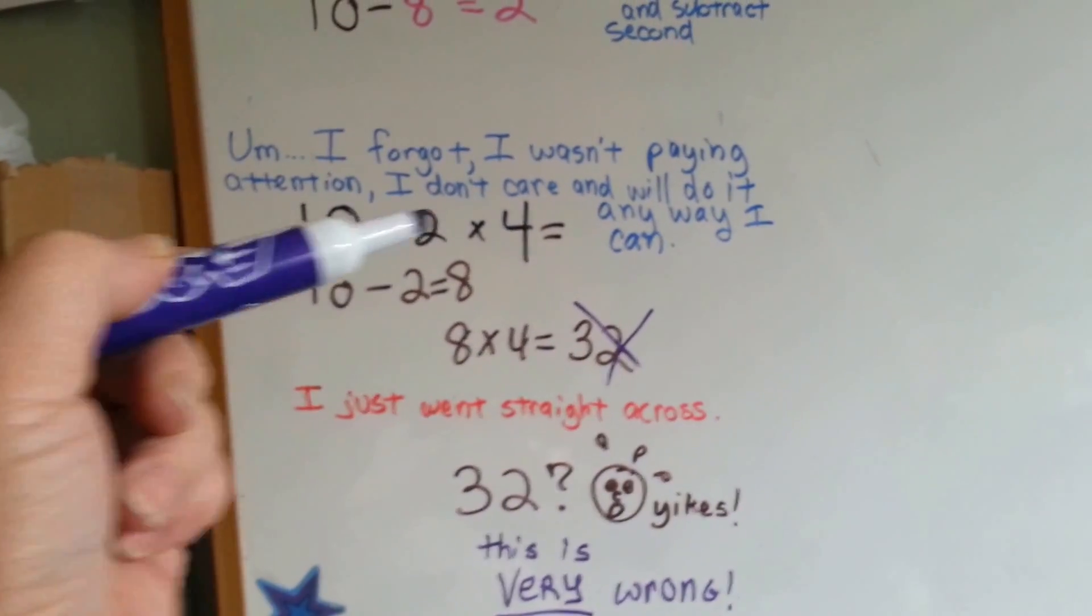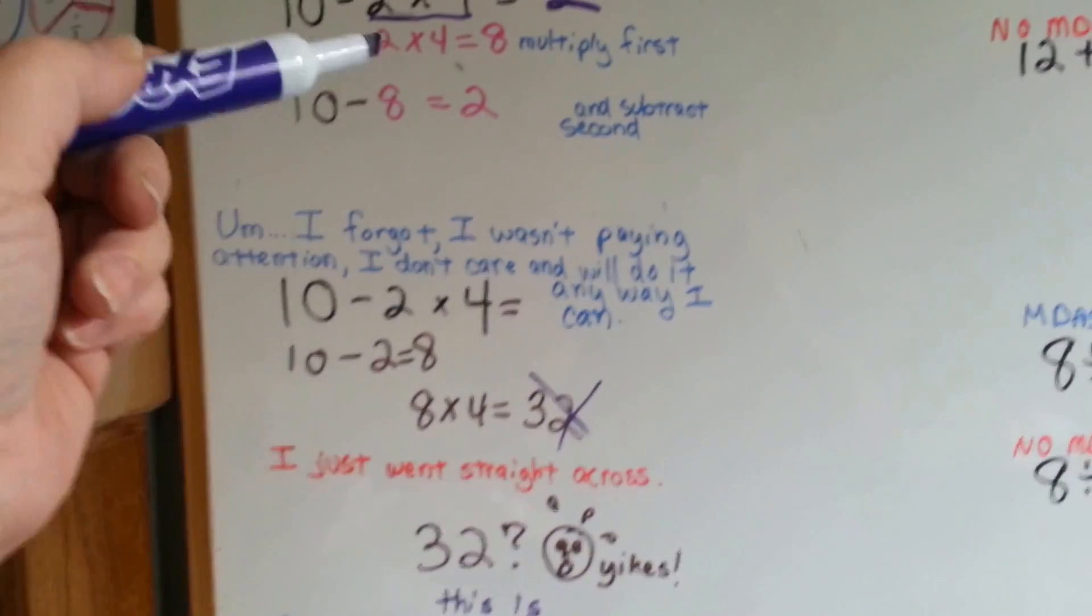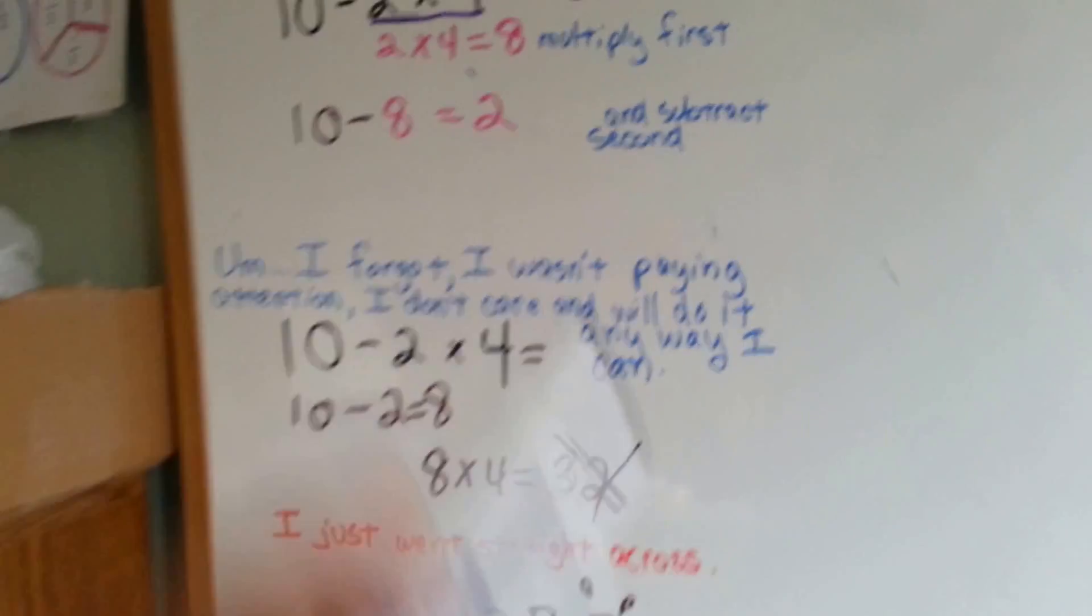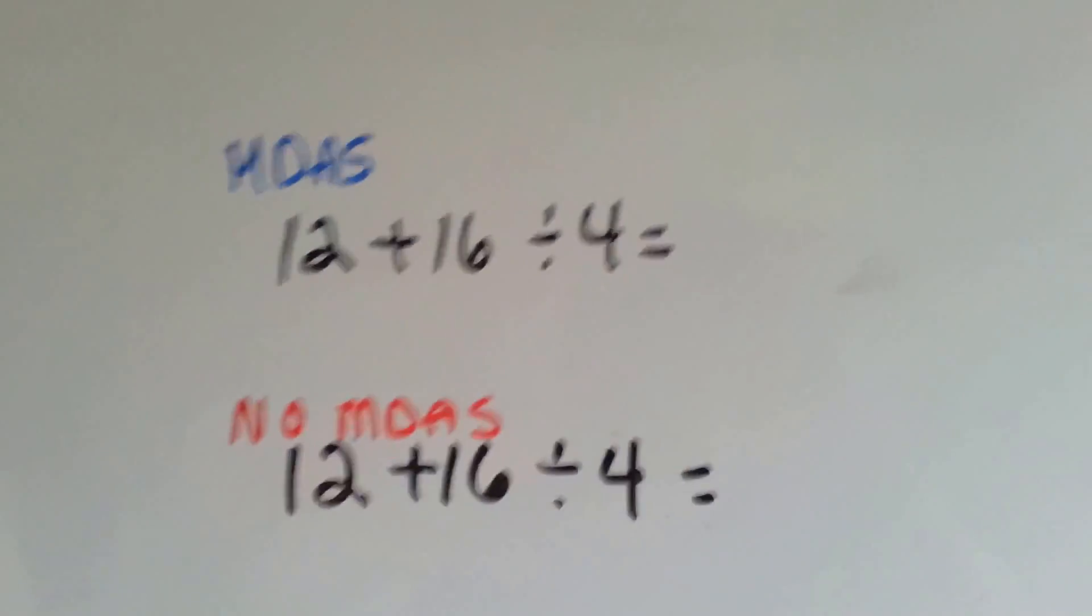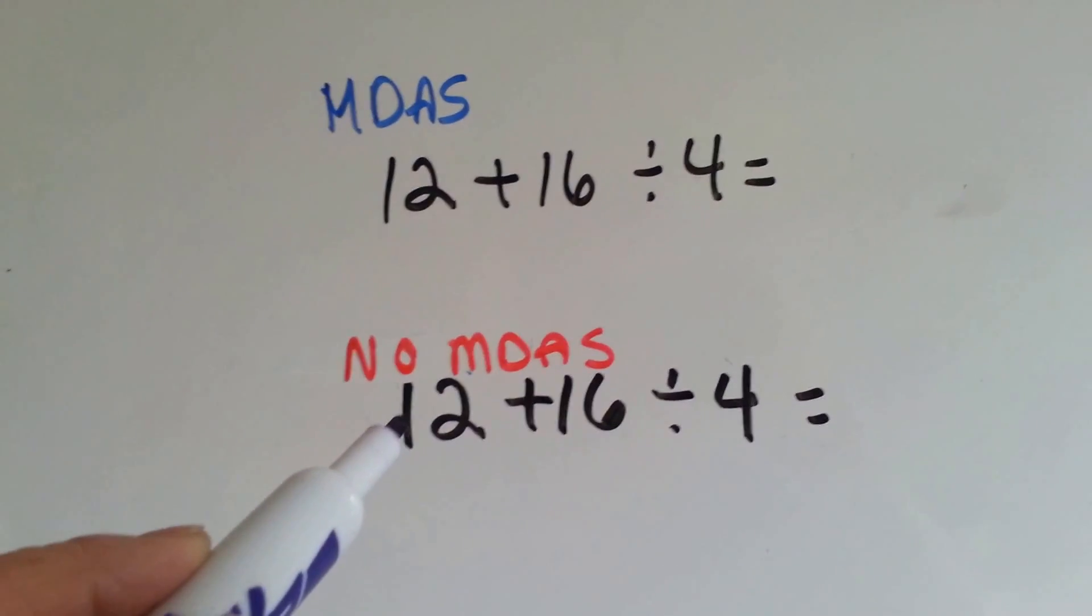Because you didn't follow the order of operations, the real answer is 2 and you'll get it marked wrong on the test. So, you can't just do it straight across. When you see a complicated equation like this with a lot of different operations in it, you've got to follow the order of operations. I'm going to show you again. So, we're going to do this with order of operations and with no order of operations.